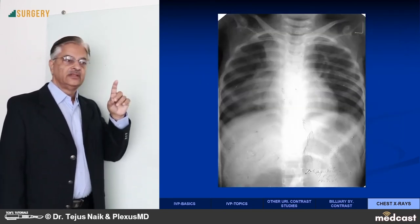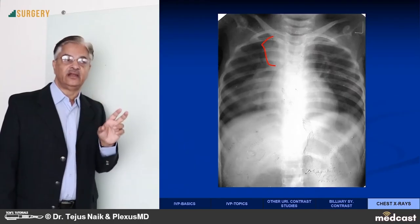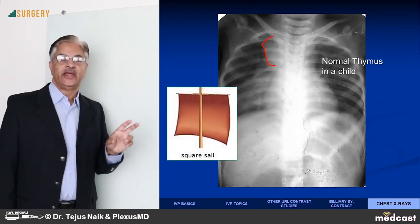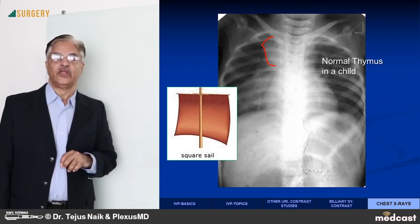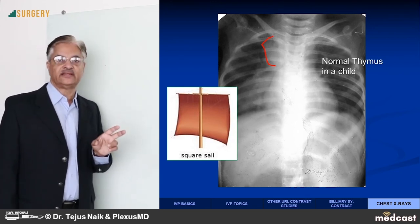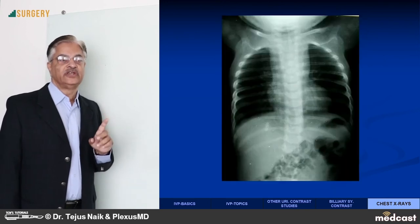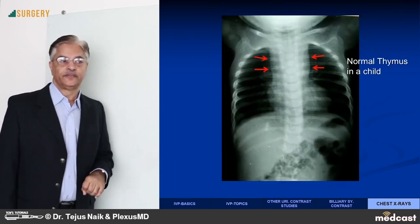In a small child, in the upper mediastinum, particularly on the right side, there is an angular shadow. This is called a sail-shaped shadow, and this is the normal thymus in a child. So widening of the upper mediastinum is normal in a child because the thymus is very large.